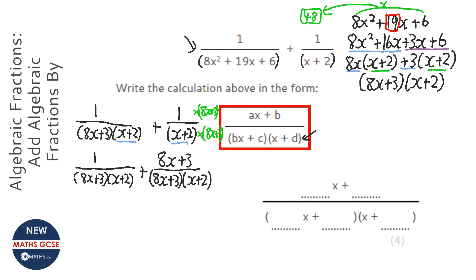Which is good because now we can add the tops together. So if we add the 1 to the 8x plus 3 we get 8x plus 4. And then we've got 8x plus 3 and then x plus 2. And that's my answer. Alright, we'll see you later.